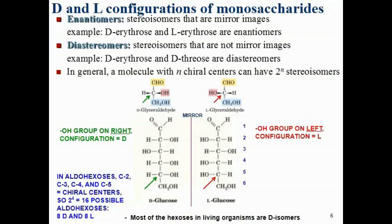The number of isomers a molecule can form depends on its chiral centers. Glucose has four chiral centers — carbons 2, 3, 4, and 5 — so hexoses can form 2⁴ = 16 possible aldohexoses, half D and half L. Most hexoses in living organisms are D-isomers, while amino acids are L-isomers. Diastereomers are stereoisomers that are not mirror images — for example, erythrose and threose are stereoisomers but not enantiomers.